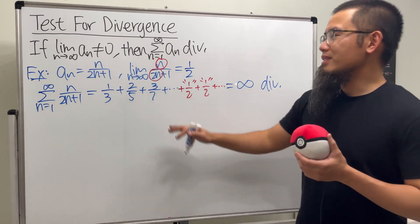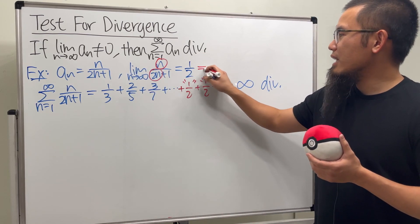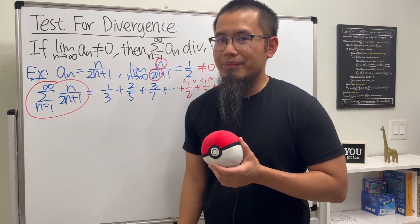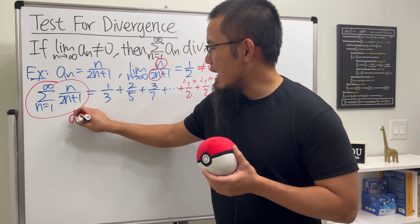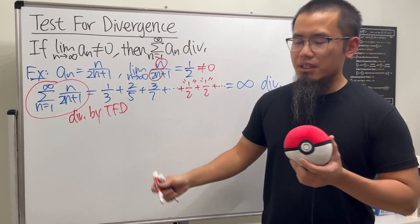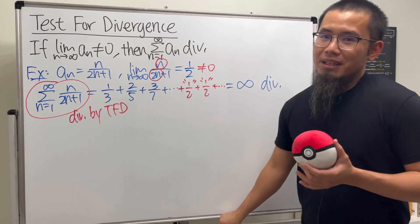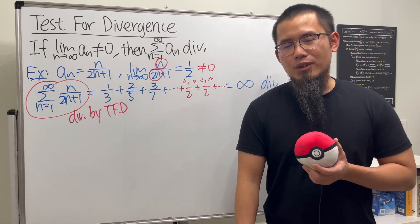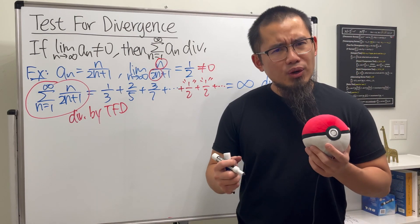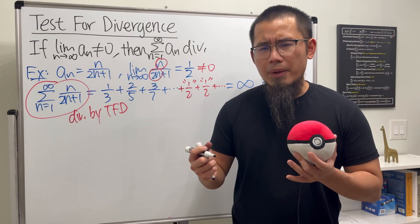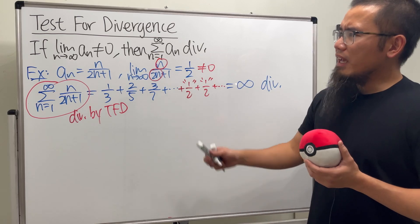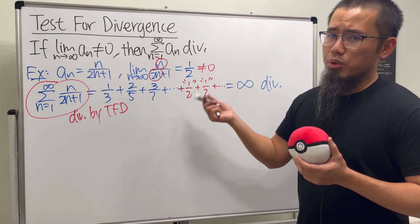So this series diverges. But of course, earlier we could have stopped right away: one half is not equal to zero, so we say the series diverges by the test for divergence — done. But this is not the main discussion for today, because we also have the integral test, which shows the connection between an infinite series and an improper integral.